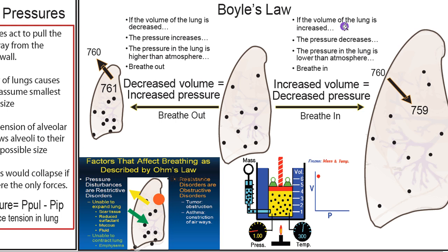If the volume of the lung is increased, it's going to be less likely that these molecules hit the wall of the alveolus — this is comprised of tiny little bubbles of air — and the pressure will decrease. The pressure in the lung will be lower than atmosphere, and so air will flow in. So: decreased volume equals increased pressure, we breathe out; increased volume equals decreased pressure, and we breathe in.